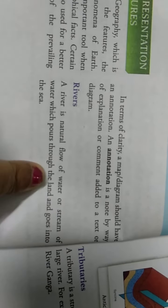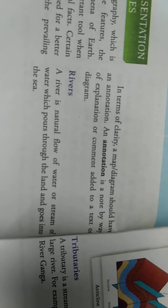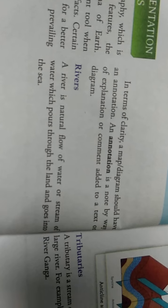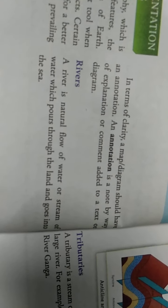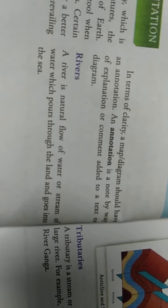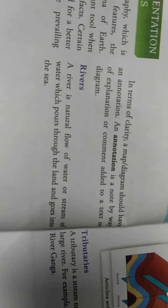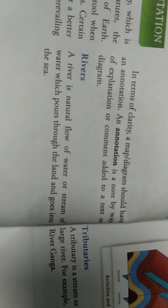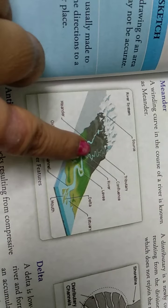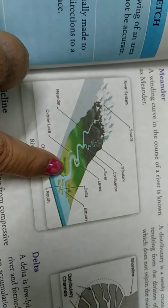In terms of clarity, a map diagram should have notation. Notation is a note by way of explanation or comment added to the text or diagram. For instance, rivers. A river is a natural flow of water or stream of water which flows through the land and goes into the sea. Here a river is drawn. Meander - a meander is a winding curve. See here, curves are done. Those are known as meanders in the course of the river.